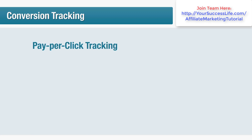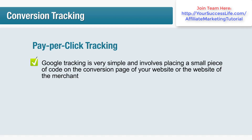Google, Yahoo and MSN allow you to place their conversion tracking codes on your thank you pages so that you can see how many sales resulted from each ad group and how much each sale cost you. Setting up Google's tracking is very simple and involves placing a small piece of code on the conversion page of your website or the merchant's website. The conversion page is the page that confirms the action you wanted — such as 'thank you for purchasing X software' or 'thank you for signing up to my mailing list'.